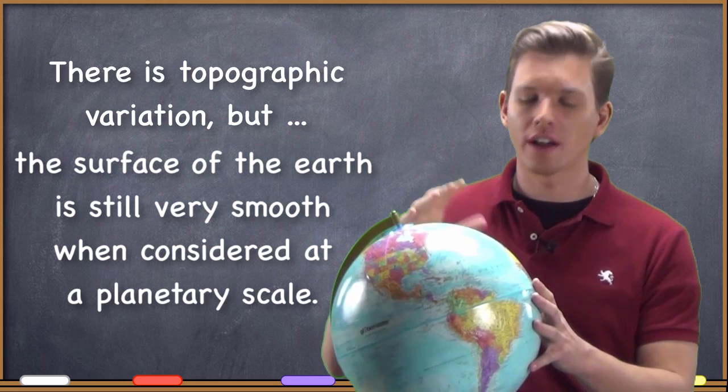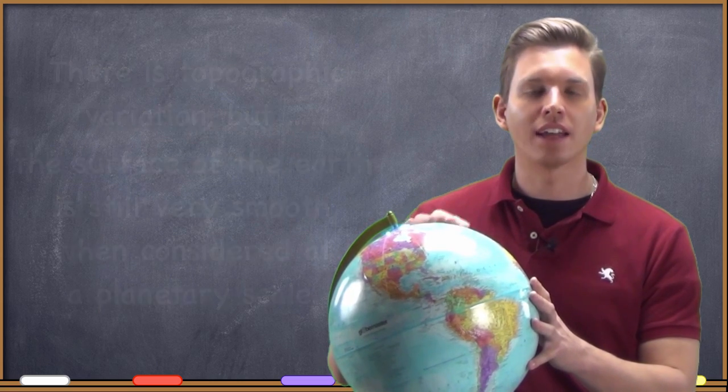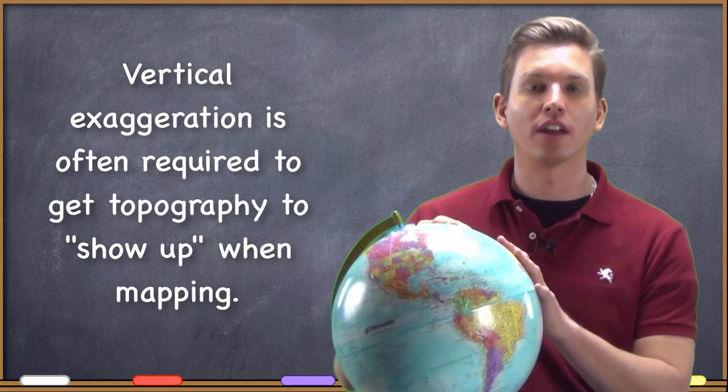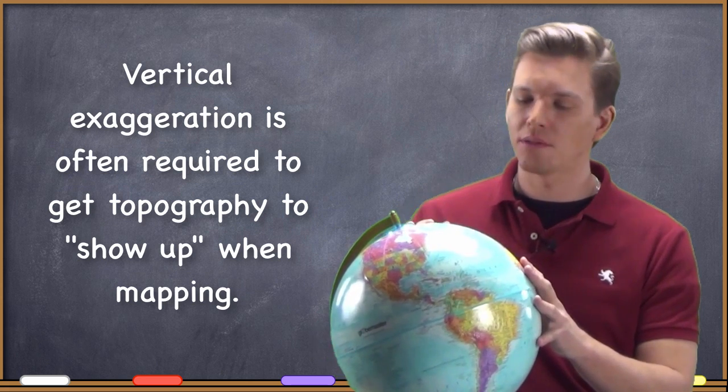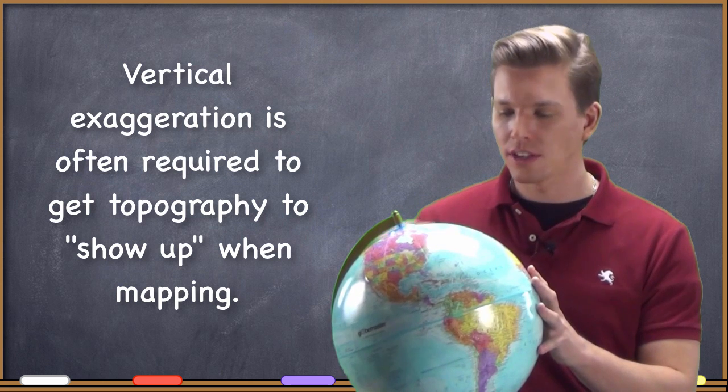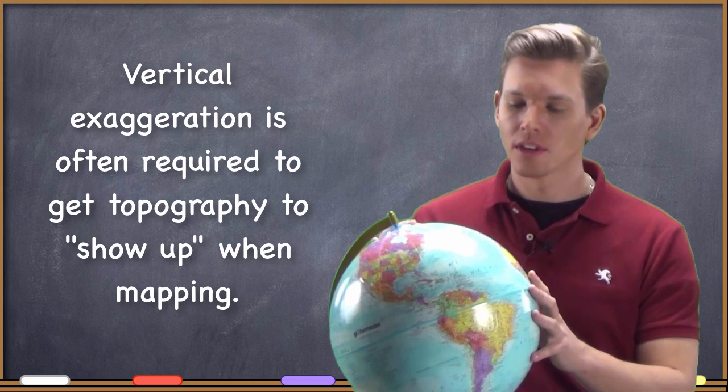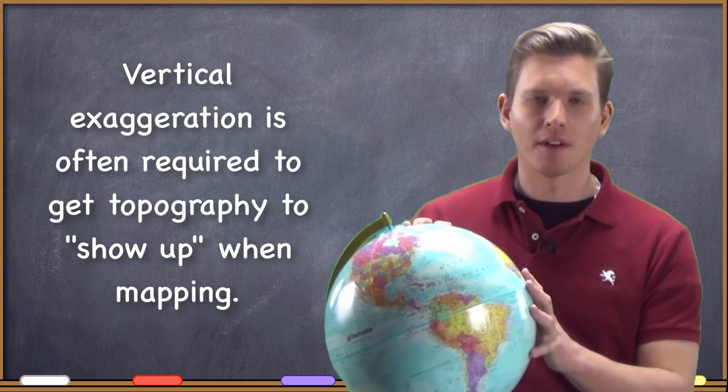When we talk about three-dimensional representation, we actually often have to exaggerate the topography of different areas in order to get them to show up. So yes, there is topographic variation, but when you're talking about the entire Earth, it's not very much. Valleys are not much lower than the surface of the Earth.